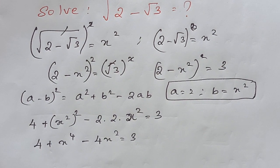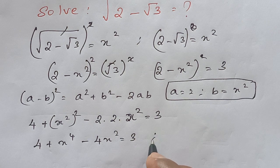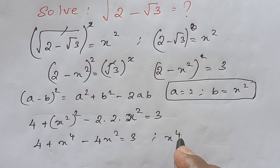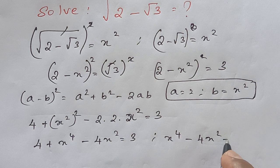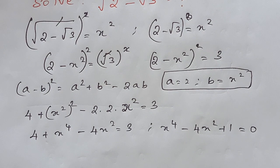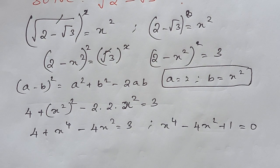So x to the power 4 minus 4x squared plus 1 is equal to 0. Now we have the equation.